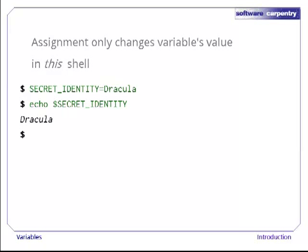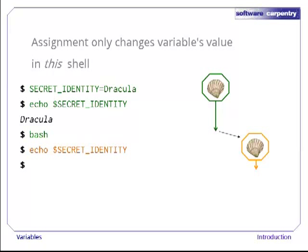Let's go back and set our secret identity once again. Once it's set, let's run a fresh copy of the shell by typing the command bash. We now have two copies of the shell running — the original, shown in green, and its child, shown in orange. If we echo $secret_identity in the child shell, nothing is printed, because the variable doesn't have a value. If we exit the child shell and return to the original, we can see that yes, the variable does exist.